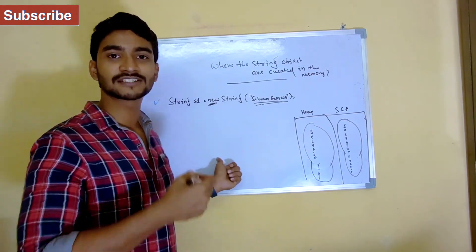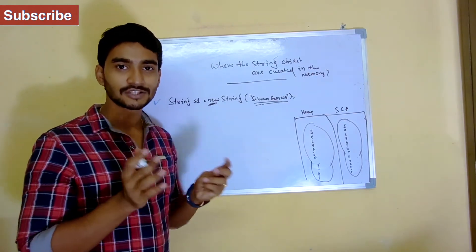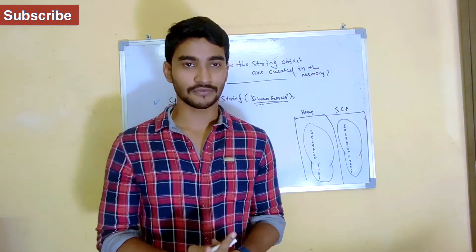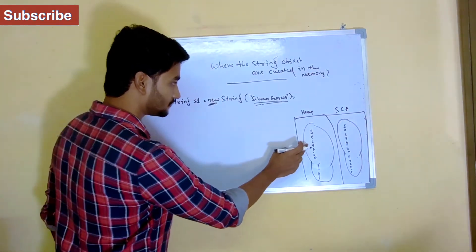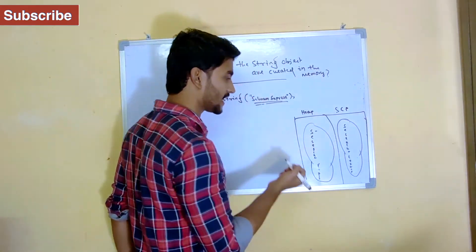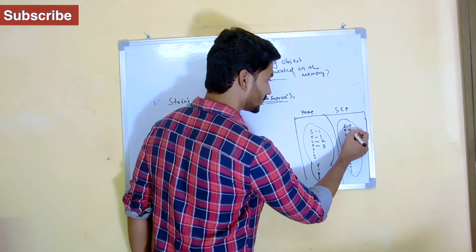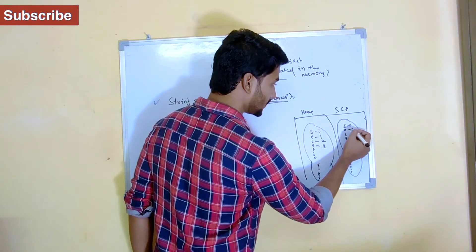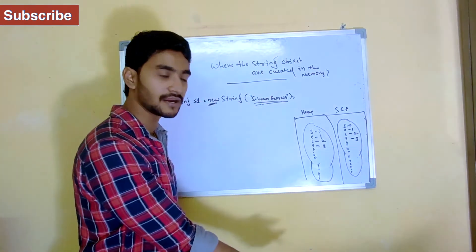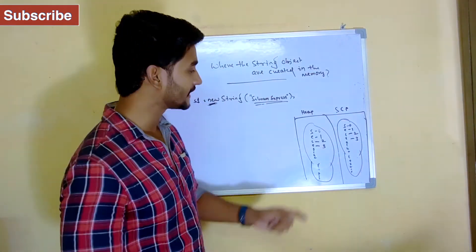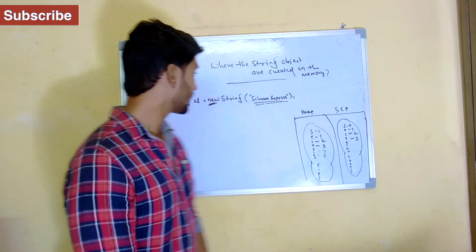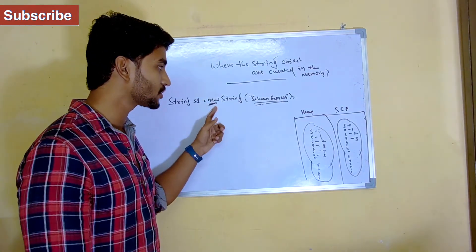One important thing — whenever string objects are created, they are stored in the form of indexes. Indexes start from zero. For example, for 'Selenium Express' inside the heap area, 'S' is at index zero, 'e' at index one, 'l' at index two, 'e' at index three, and so on. So strings store literals based on indexes.